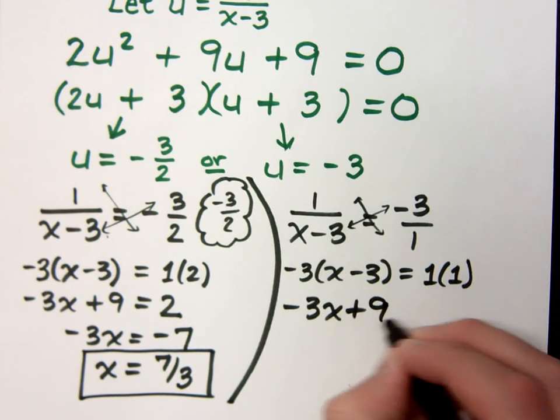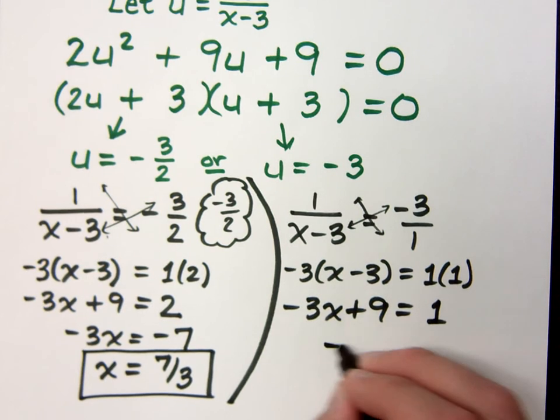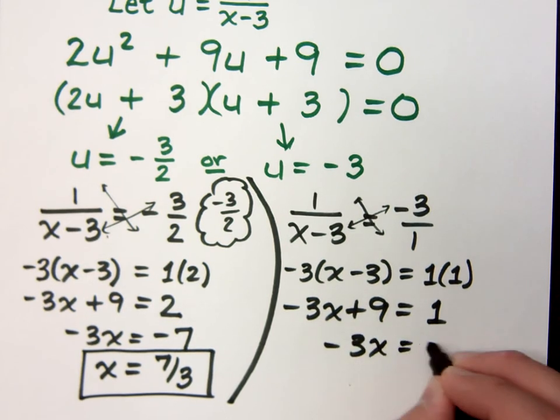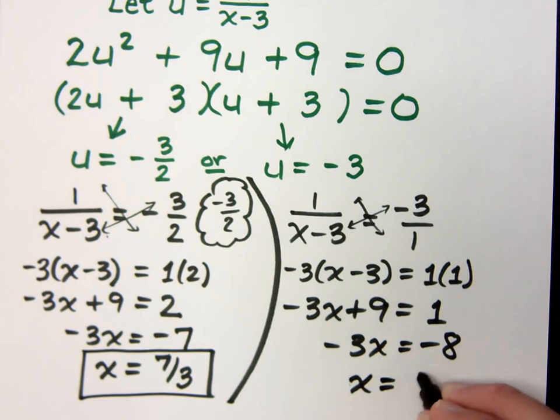So negative 3x plus 9 equals 1, and then you just kind of finish this guy off. Negative 3x equals negative 8, so x equals positive 8 thirds.